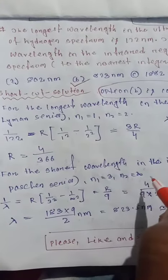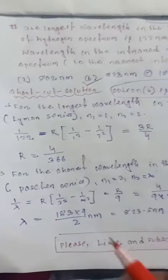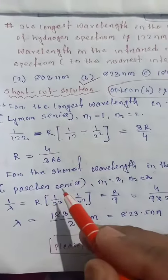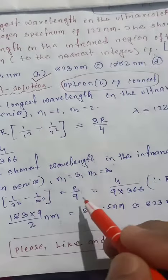So N1 equals 3 and N2 is infinite because it's the shortest wavelength. So 1 by lambda equals R times N1, which is 3 squared, and N2 is infinite squared, so R by 9.